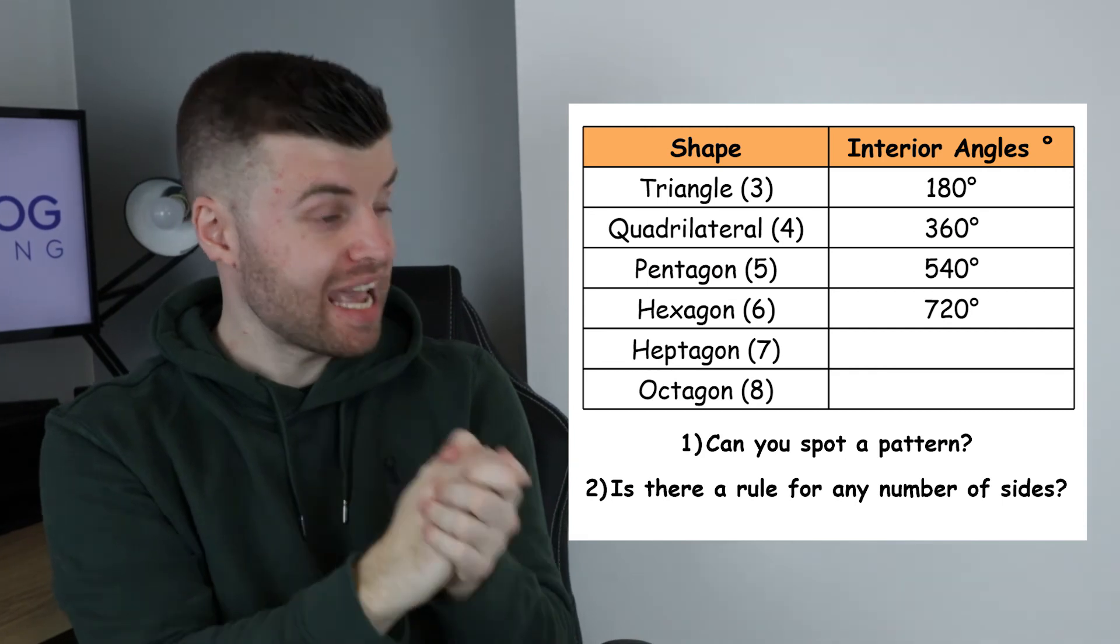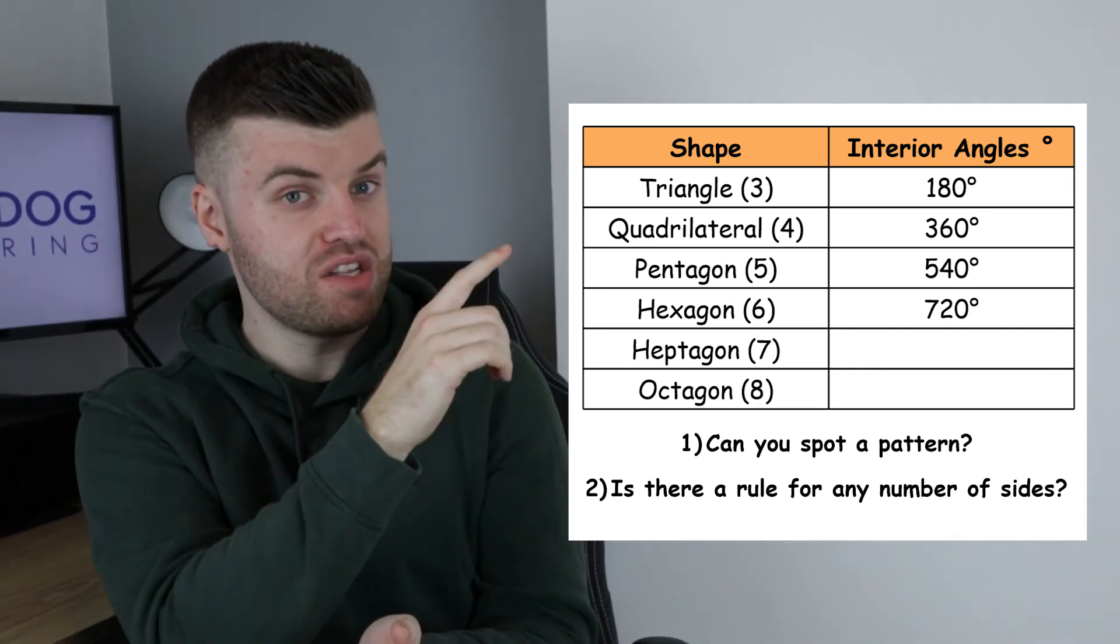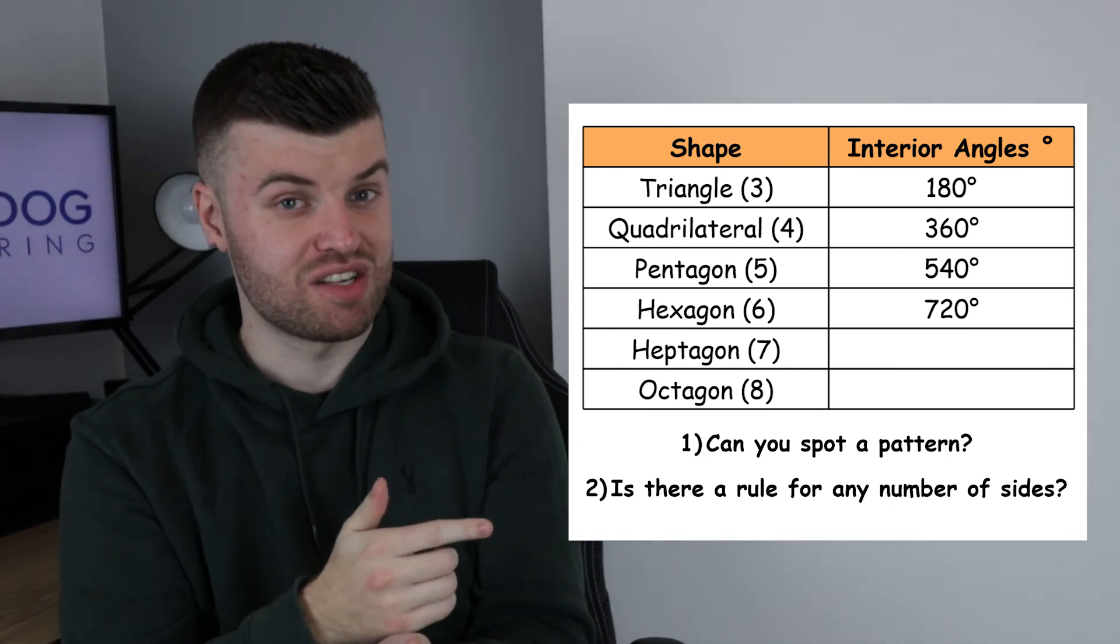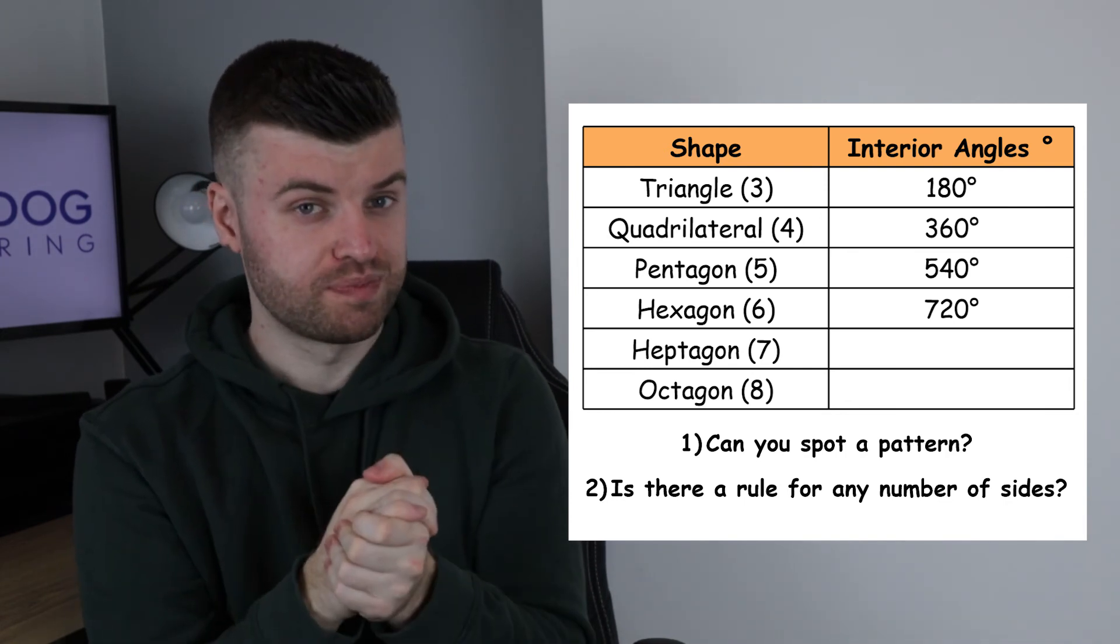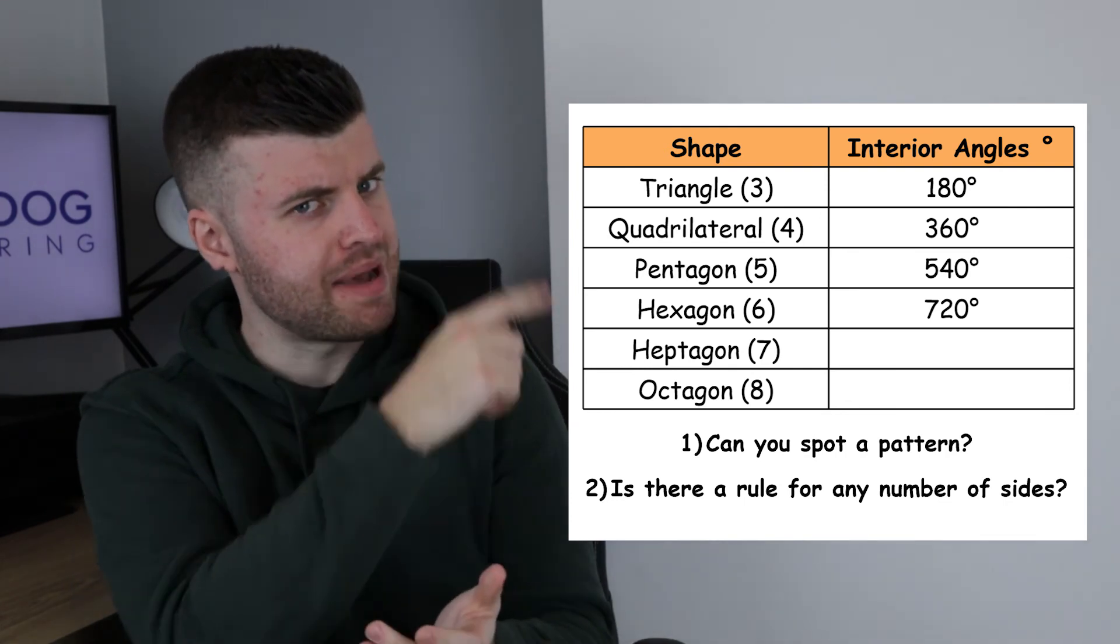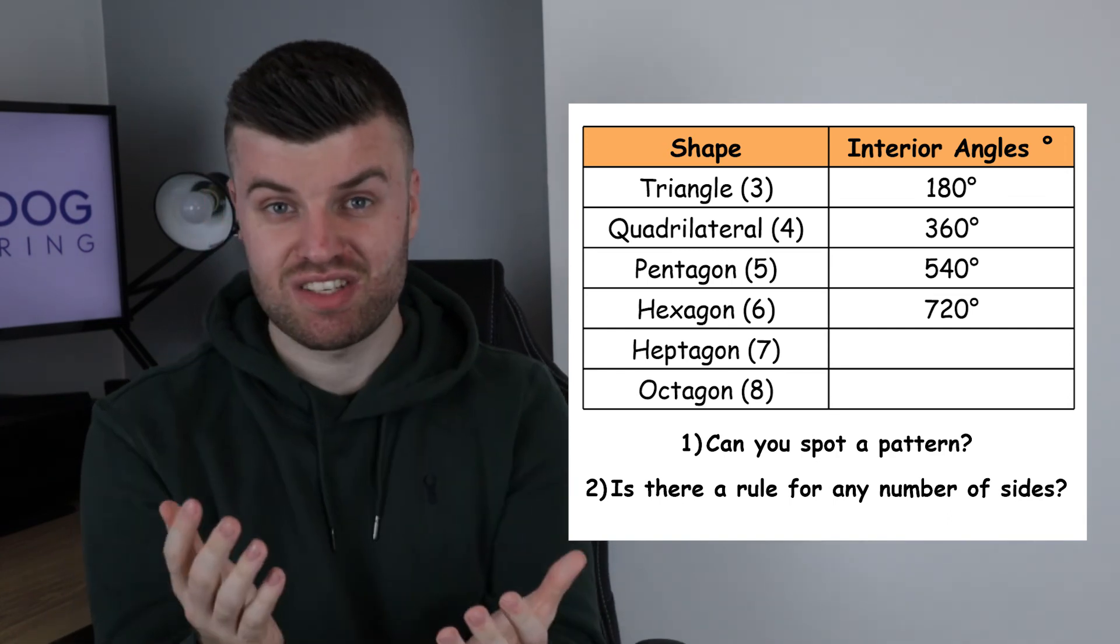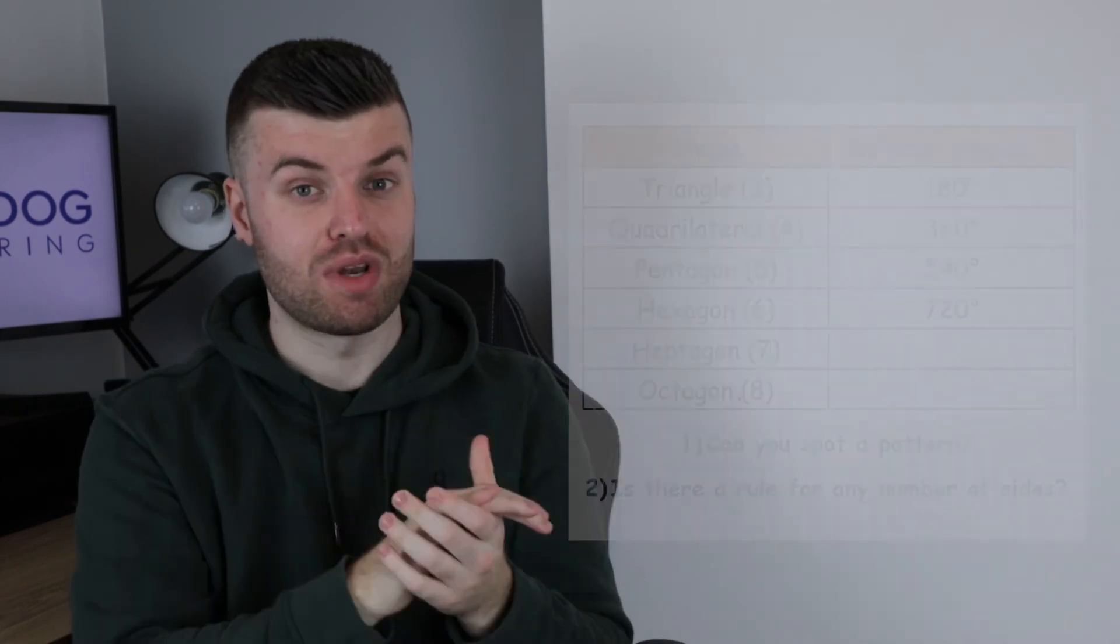We've also got a challenge question. Now what we've done is we've put a table together of all of the results of our investigation so far. Three sided shapes, four sided shapes, five sided shapes and even a hexagon, six sided shape. We've recorded the interior angles and what they total. Now can you try and spot a pattern? Do you know what might come next for a seven sided shape or even an eight sided shape? If you think you can see what's going on leave us a comment down below.